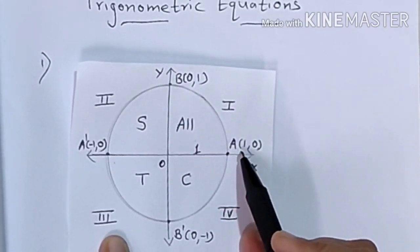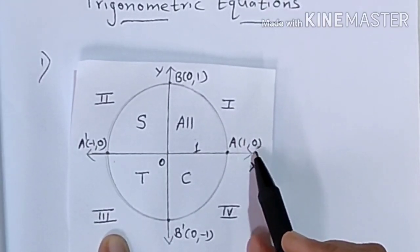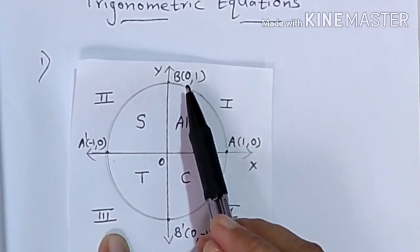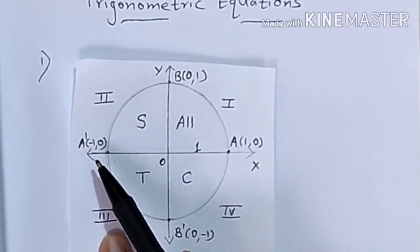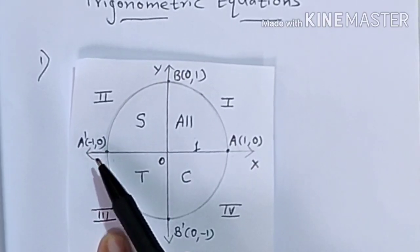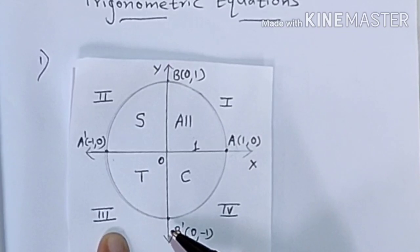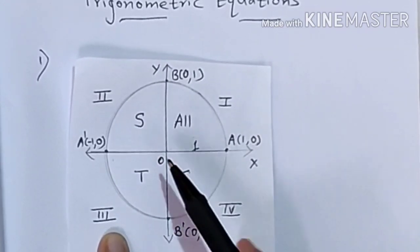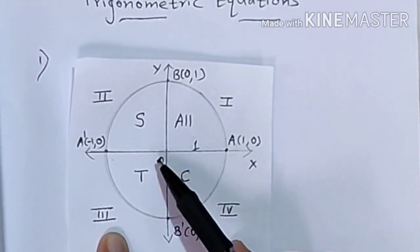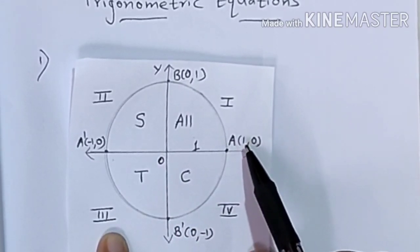Point A corresponds to angle 0. So ratios for 0 we get from coordinates of A. Ratios for π/2 we get from coordinates of B. For π we get from coordinates of A dash. The point corresponding to 3π/2 gives that angle, and one complete rotation — 360 degrees — is again point A with coordinates 1,0.